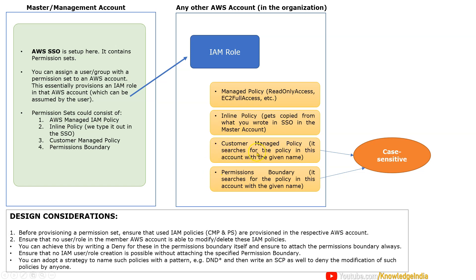Two new things: customer managed policy. Whatever name you have specified, SSO will try to search that name in the member account. For example, while creating the permission set, if I specify a policy name called, let's say, Knowledge India EC2 Access — that policy should exist in the member account, not in the master account. It should exist in the member account as an IAM policy. In the same way, whatever you specify as permissions boundary, that policy should also exist in the member account. These two things are very important.